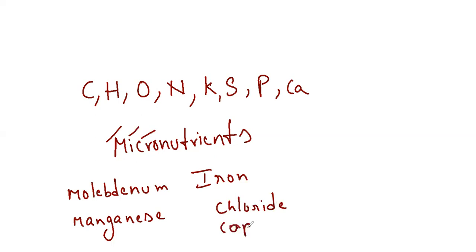And I for, remember iron. R, O, boron. N for nickel. This is a mnemonic you can remember: molybdenum, manganese, iron, chloride, copper, boron, nickel. So these are the micronutrients that required for plant growth. And finally, we'll end up with the Z zinc.